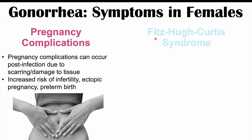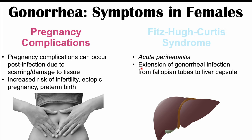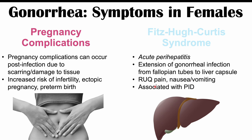Some female patients can also develop Fitzhugh-Curtis syndrome, which is acute perihepatitis — inflammation around the liver capsule. This results from extension of the gonorrheal infection from the fallopian tubes to the liver capsule, leading to right upper quadrant pain, nausea, and vomiting. It is most often associated with PID.